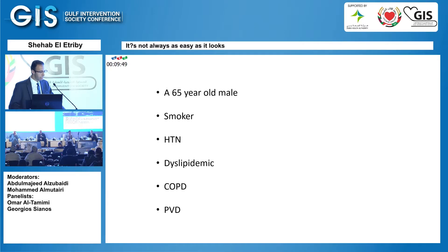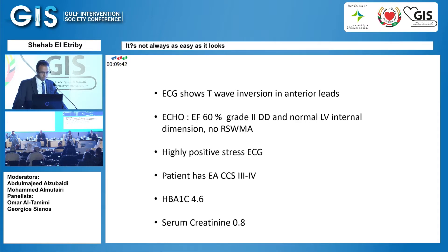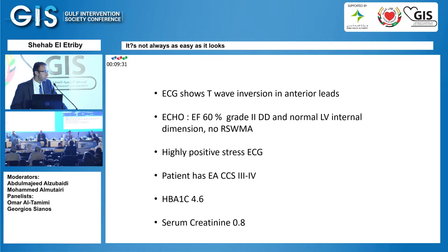Good afternoon. My case is a 65-year-old male, smoker, hypertensive, dyslipidemic, with COPD and peripheral vascular disease. His ECG showed T-wave inversion in the anterior leads, with an echo showing no segmental motion abnormality. He had typical chest pain, effort angina class three to four.